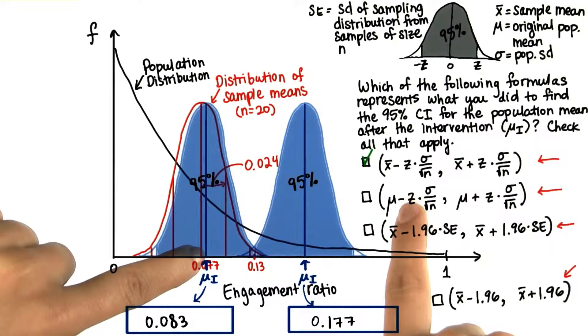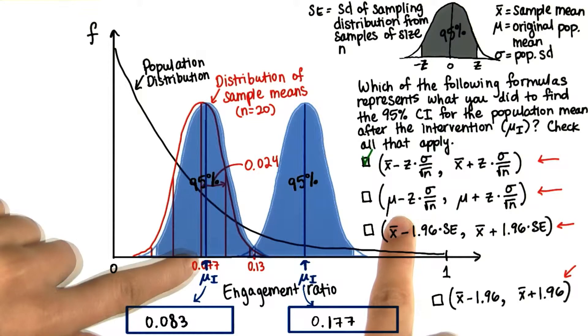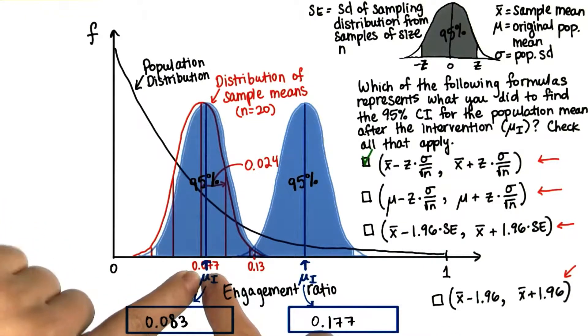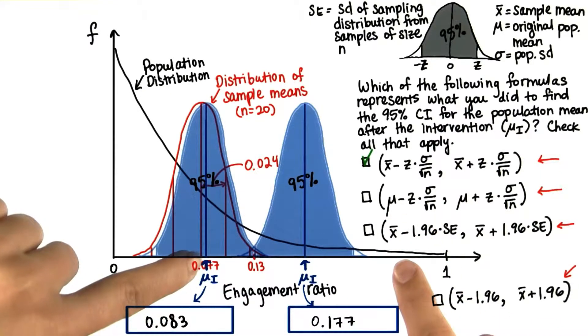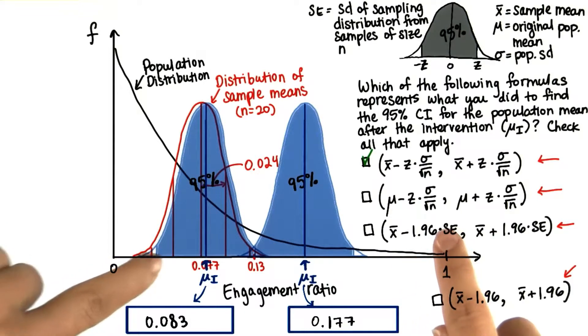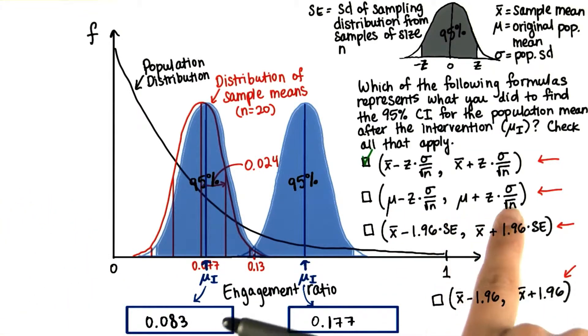However, we did not subtract z standard deviations from the population mean. Remember, the original population mean was 0.077. If we did that, then we would get a confidence interval for the original population mean. And that's not what we're interested in.